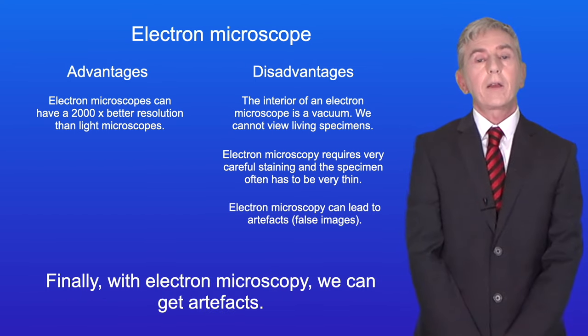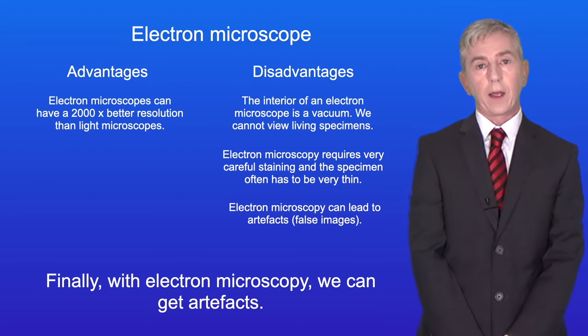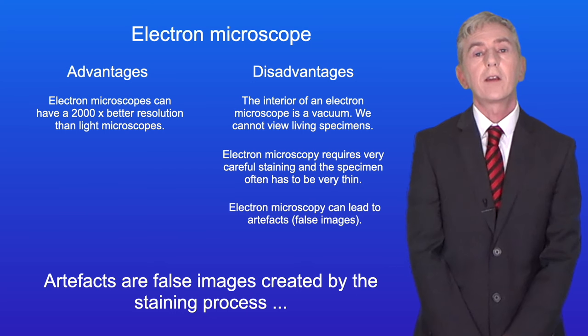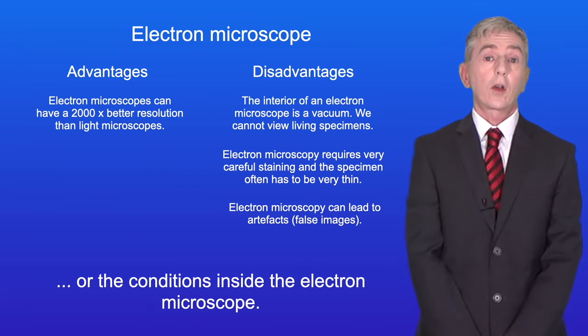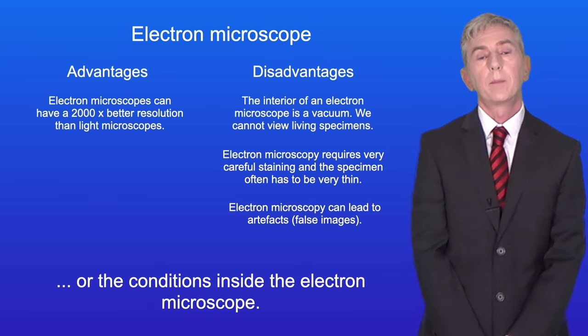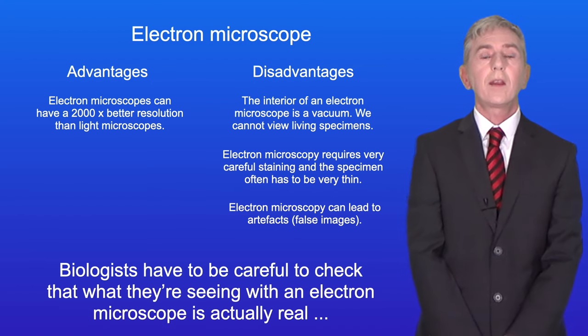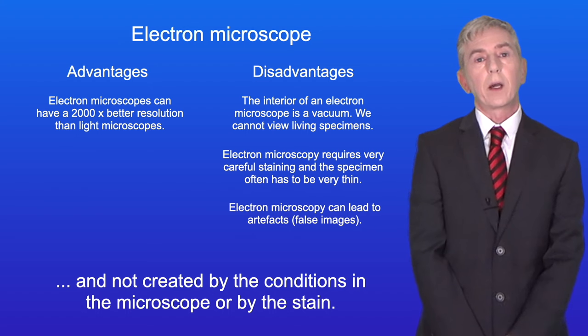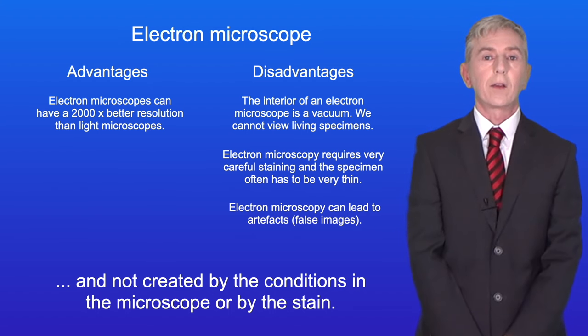Finally, with electron microscopy, we can get artifacts. Artifacts are false images created by the staining process or the conditions inside the electron microscope. Biologists have to be careful to check that what they're seeing is actually real and not created by the microscope conditions or the stain.